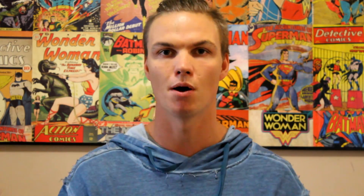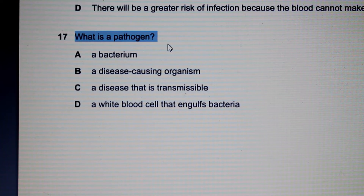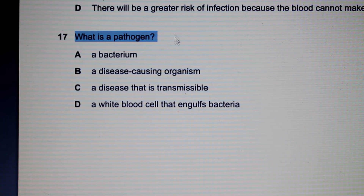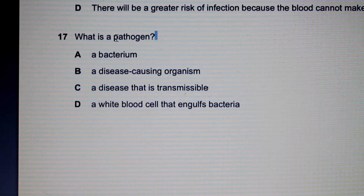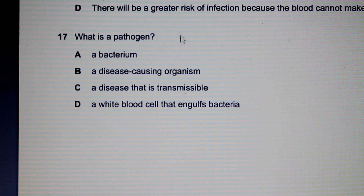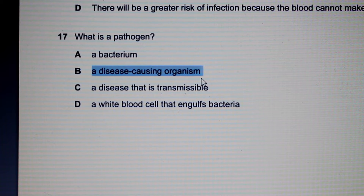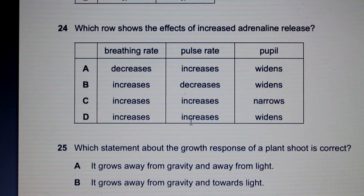Now let's look at some past paper problems. Question 17: What is a pathogen? A pathogen is something that causes disease. Is it specifically a virus, bacteria, or fungi? A pathogen can be all of those — it's not specific, it's simply something that causes disease. The answer is B.